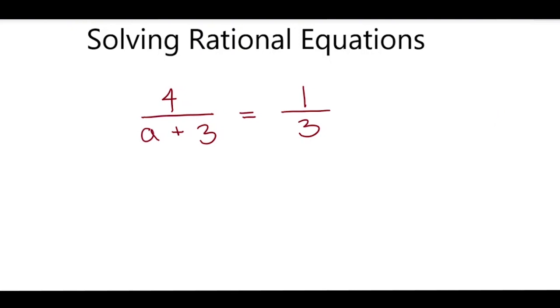I'll cross multiply. I see that my variable is right here, so I'll start there and multiply a plus 3 times 1. That's just a plus 3, and set that equal to 4 times 3. So I have a plus 3 equals 12.